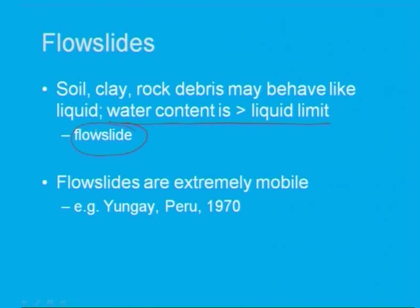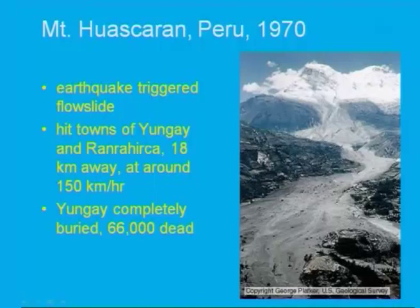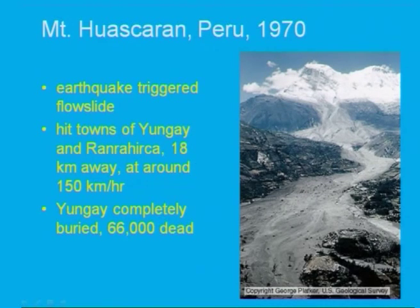Flow slides are extremely mobile. As observed in Peru in 1970, an earthquake triggered flow slides where the water content increased above the liquid limit, and the debris hit the town of Yungay approximately 18 kilometers away at around 150 kilometers per hour. The complete mass of soil along the slope flowed downward.